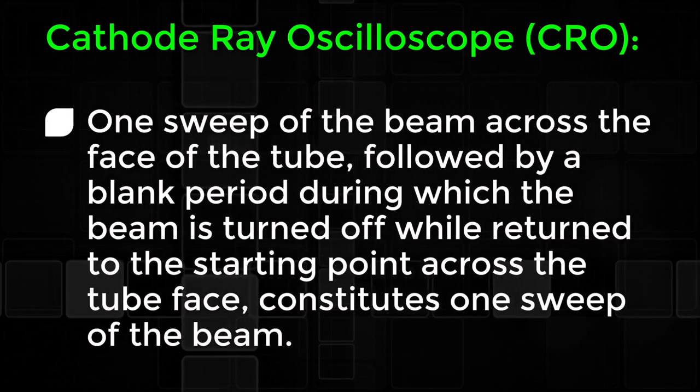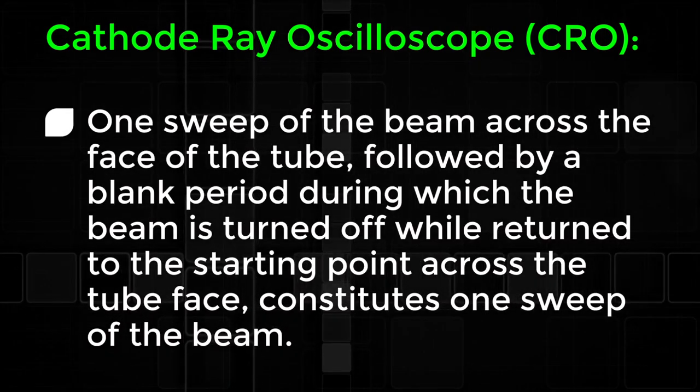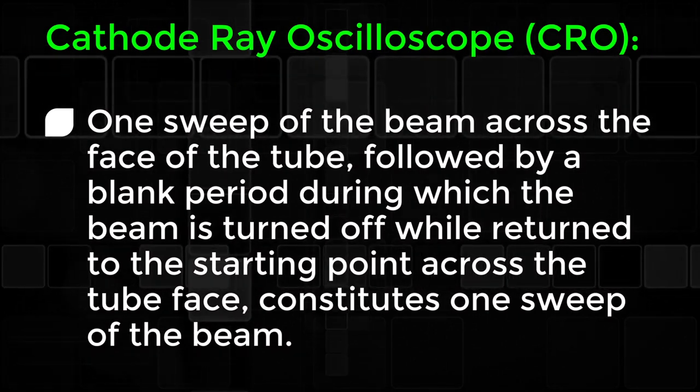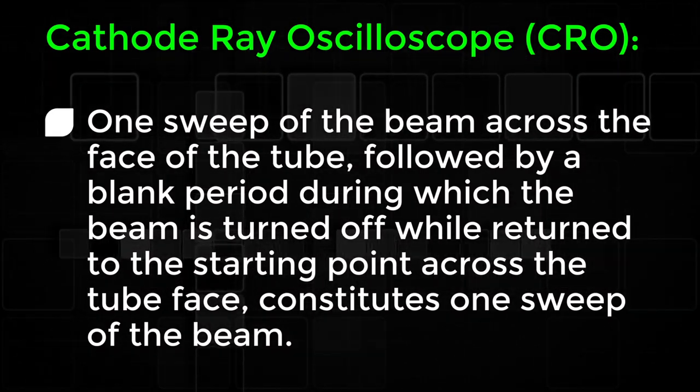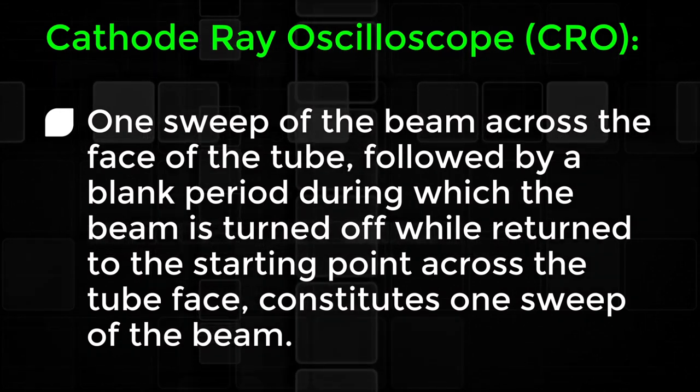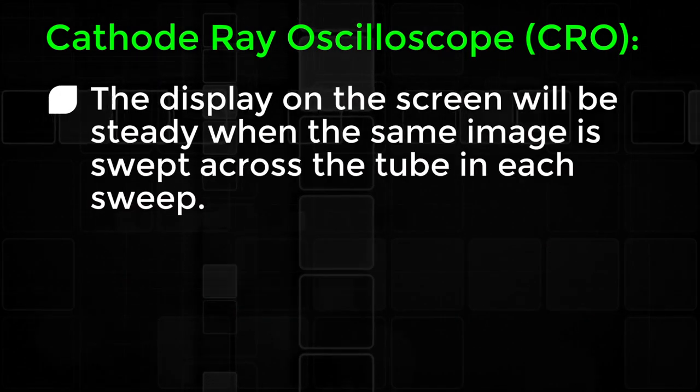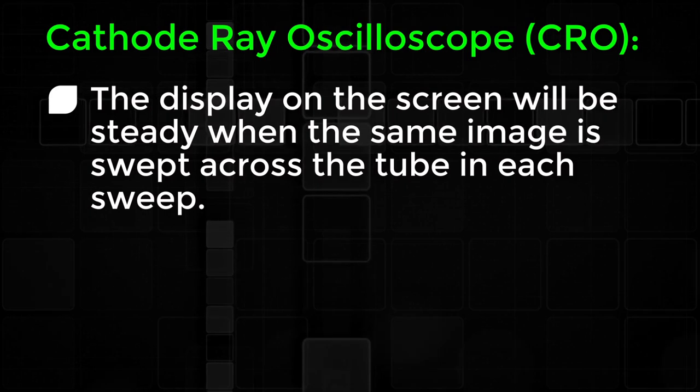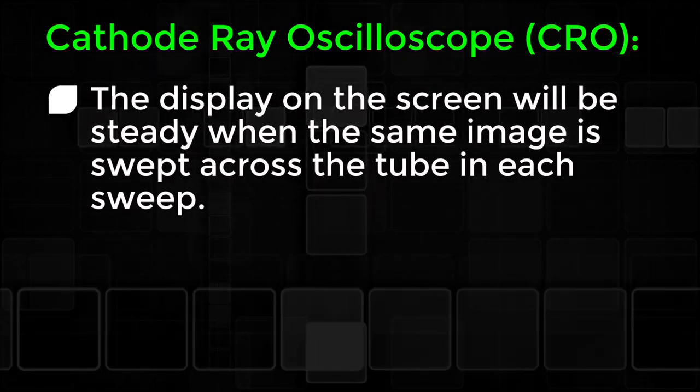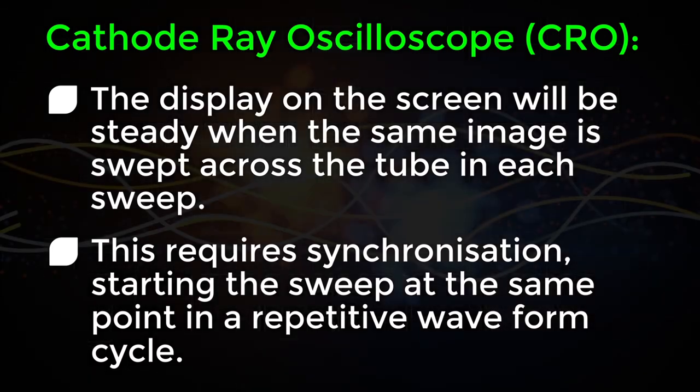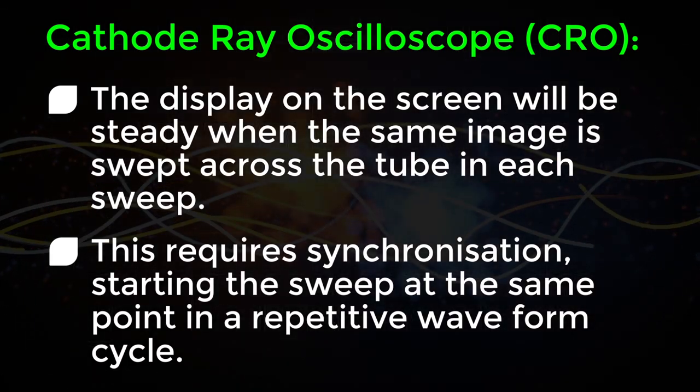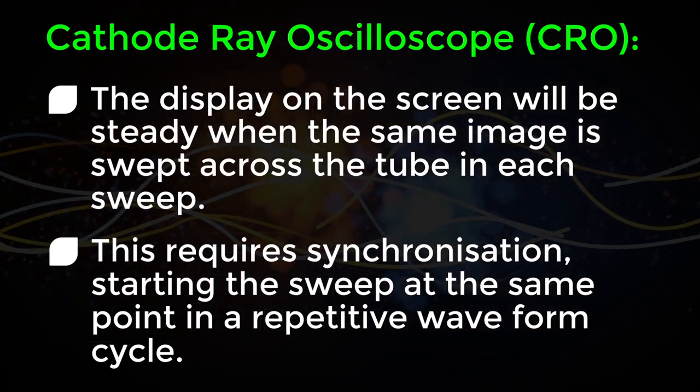One sweep of the beam across the face of the tube followed by a blank period during which the beam is turned off while returning to the starting point across the tube face constitutes one sweep of the beam. The display on screen will be steady when the same image is swept across the tube in each sweep. This requires synchronization starting the sweep at the same point in a repetitive waveform cycle.